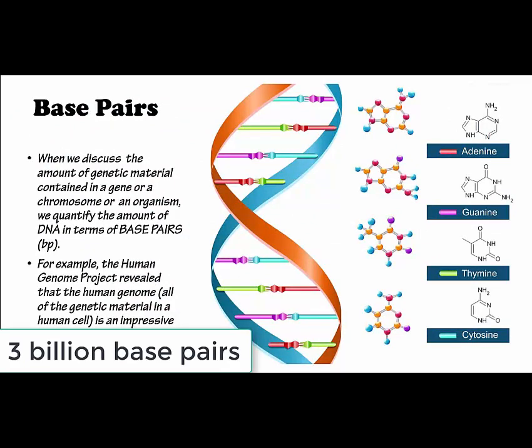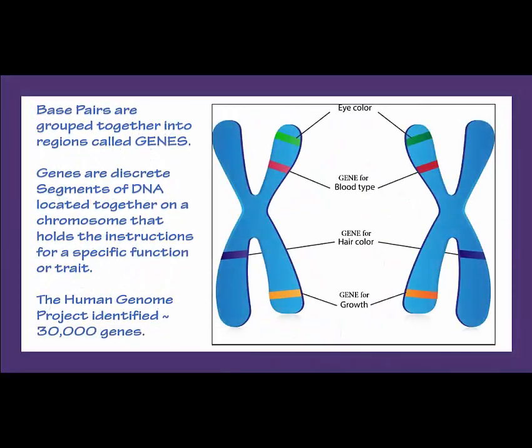When we discuss the amount of genetic material in a gene, chromosome, or organism, we quantify the DNA in terms of base pairs. For example, the Human Genome Project revealed that the human genome — all of the genetic material in a human cell — is an impressive 30 billion base pairs. Base pairs are grouped together into regions called genes, which are discrete segments of DNA on a chromosome that hold the instructions for a specific function or trait. The Human Genome Project identified 30,000 genes.